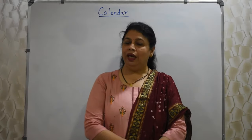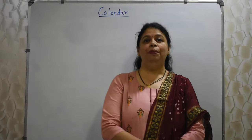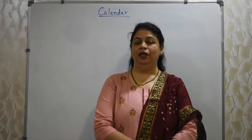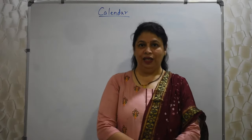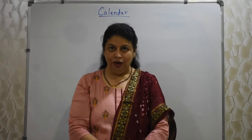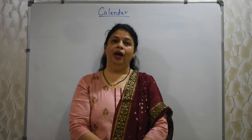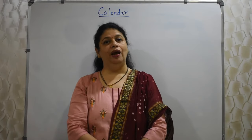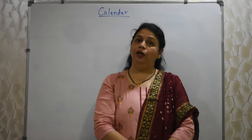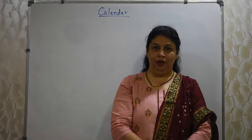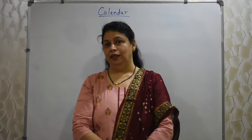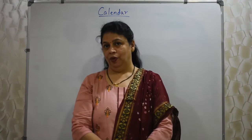February in a leap year has 29 days; otherwise in a normal year February has 28 days. April, June, September and November have 30 days. In a normal non-leap year we have 365 days in a year.